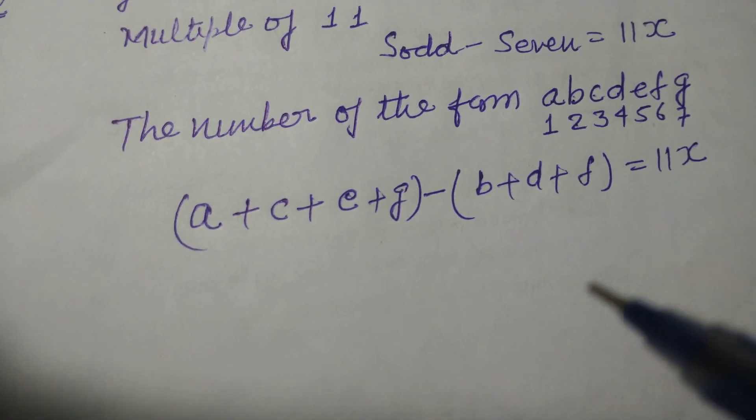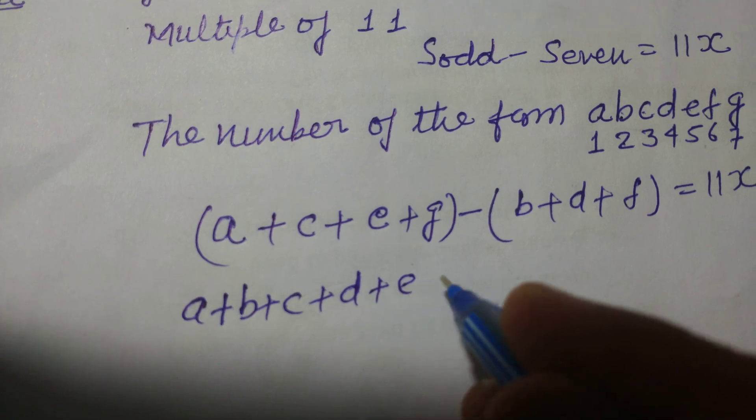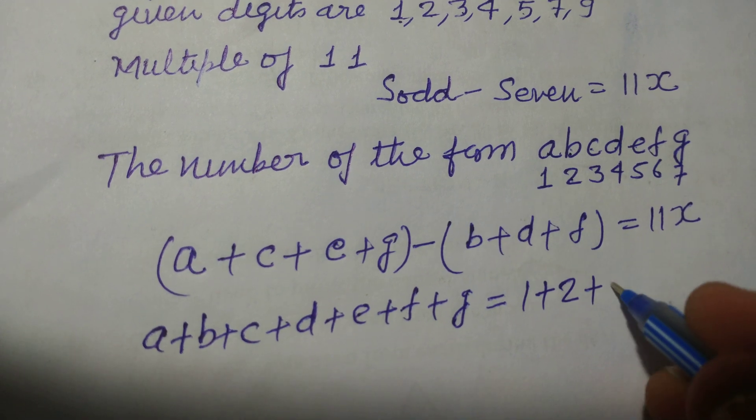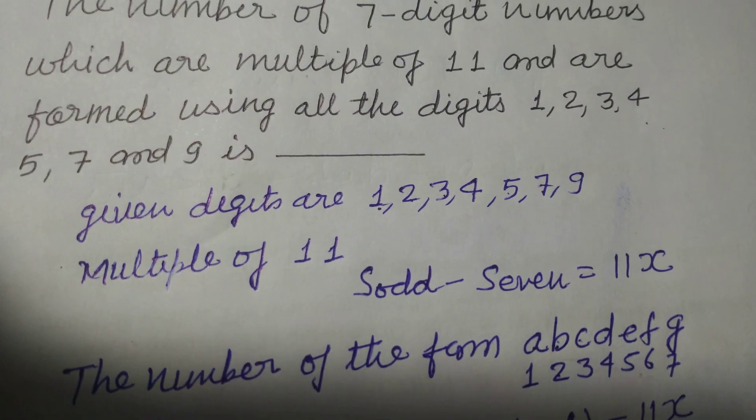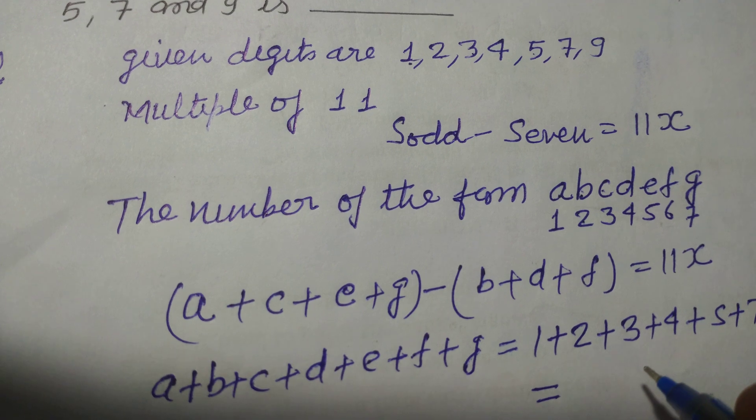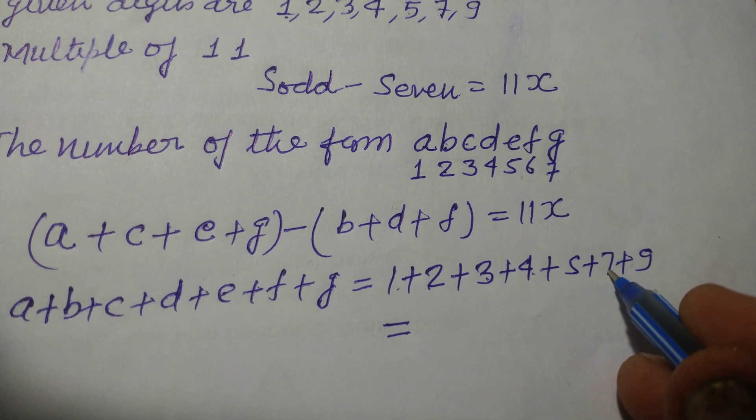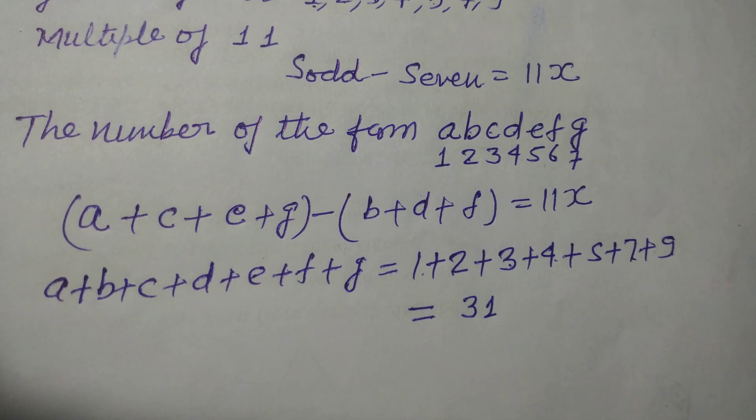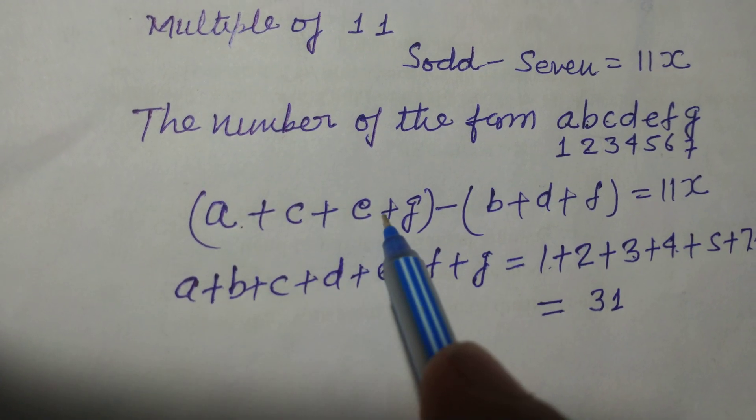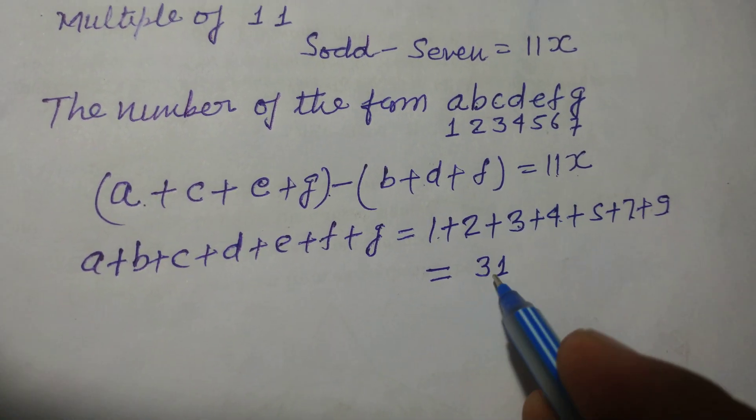Now, we add A + B + C + D + E + F + G equal to 1 + 2 + 3 + 4 + 5 + 7 + 9, and this will be equal to 31. So A + C + E + G minus B + D + F should be 11 or multiple of 11x.